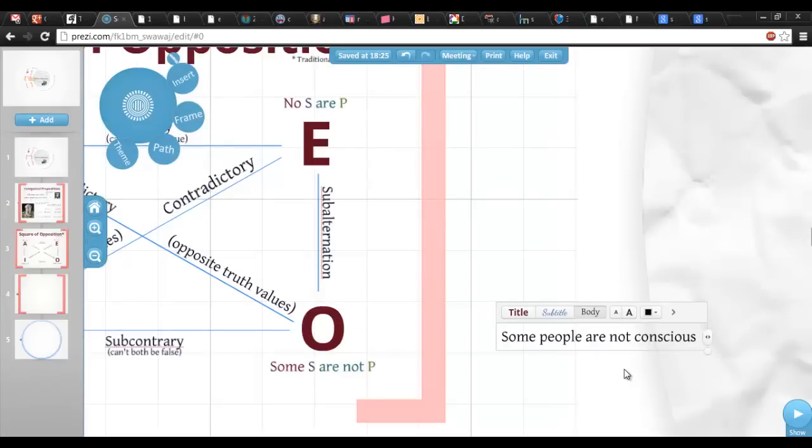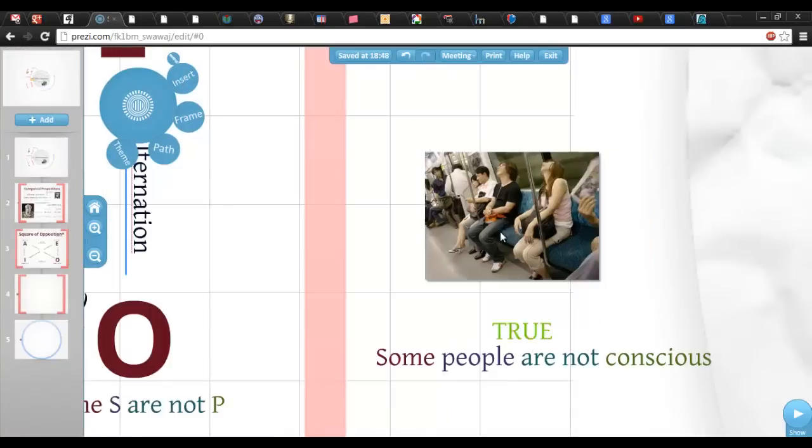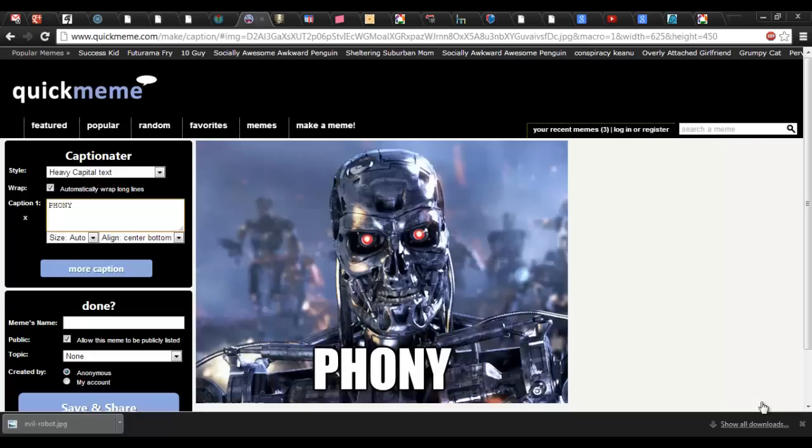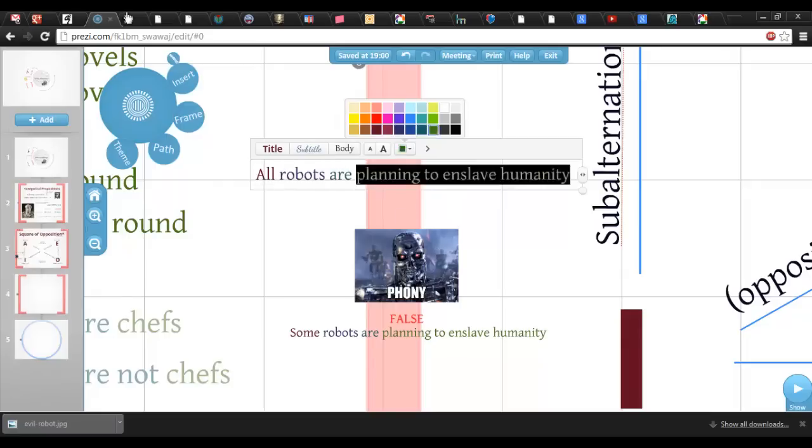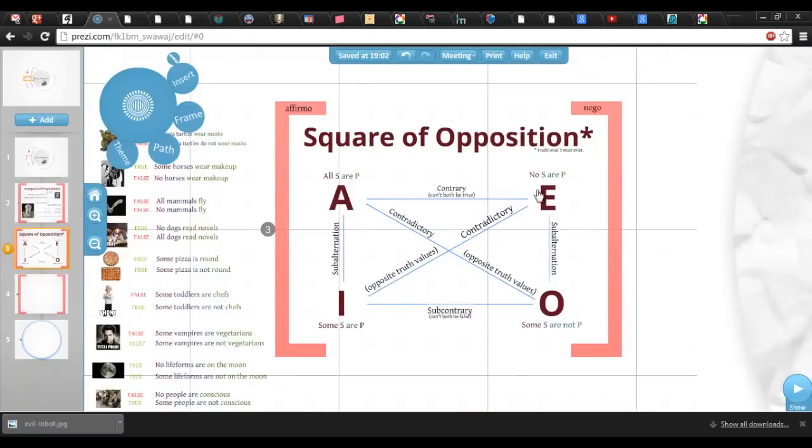But you can't say the reverse. If the particular is true, the universal still might be false. Truth only trickles down. Instead, falsity grows up. If you know a claim is false in the particular case, then it must also be false in the universal case. Subalternation works the same on both sides of the square, and it's entirely compatible with the contrary and subcontrary relations.